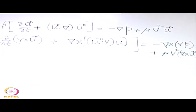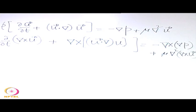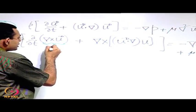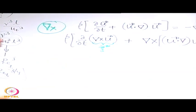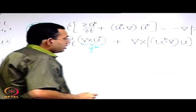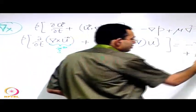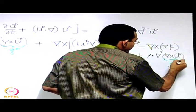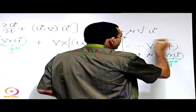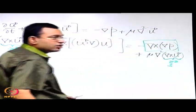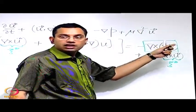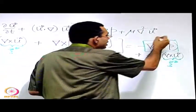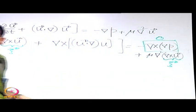Let us try to simplify this. The curl of the time derivative term is equal to the vorticity vector — let us call it zeta. There is another term we can clearly simplify: the curl of the gradient of a scalar is zero by a vector identity. So that term vanishes.